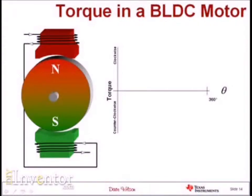Let's turn our attention now to brushless DC motors. The topology is quite different from a brush DC motor in the sense that the coils are now on the stator and the permanent magnet is on the rotor. So it's like we took our brush DC motor and flipped it inside out. I'm going to pass some current through this coil to create a north pole in the air gap on the top stator piece and a south pole in the air gap on the bottom stator piece.